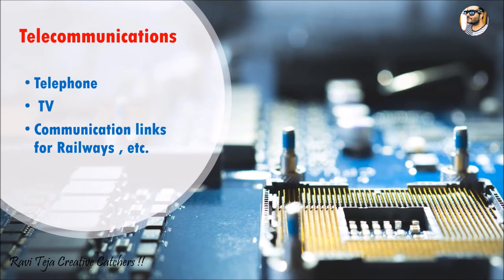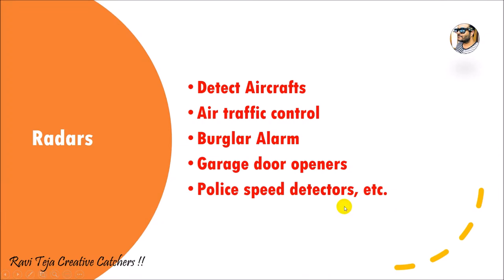Telecommunications is one of the important fields where microwaves are used. Microwave frequencies and microwave signals are very widely used in telephone networks as well as television systems. These microwave signals are also used for communication links in railways, to communicate between station to station and also between trains.